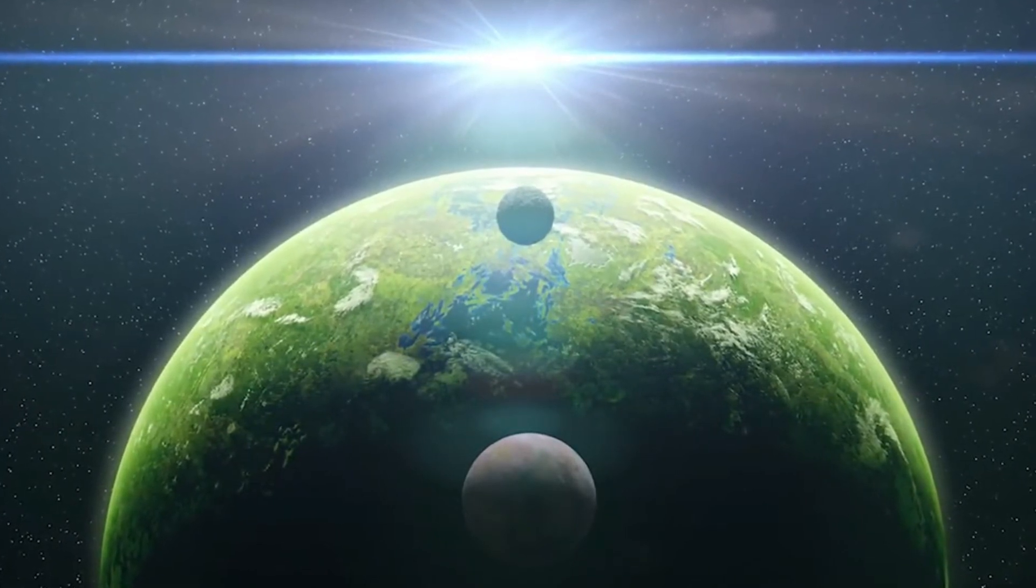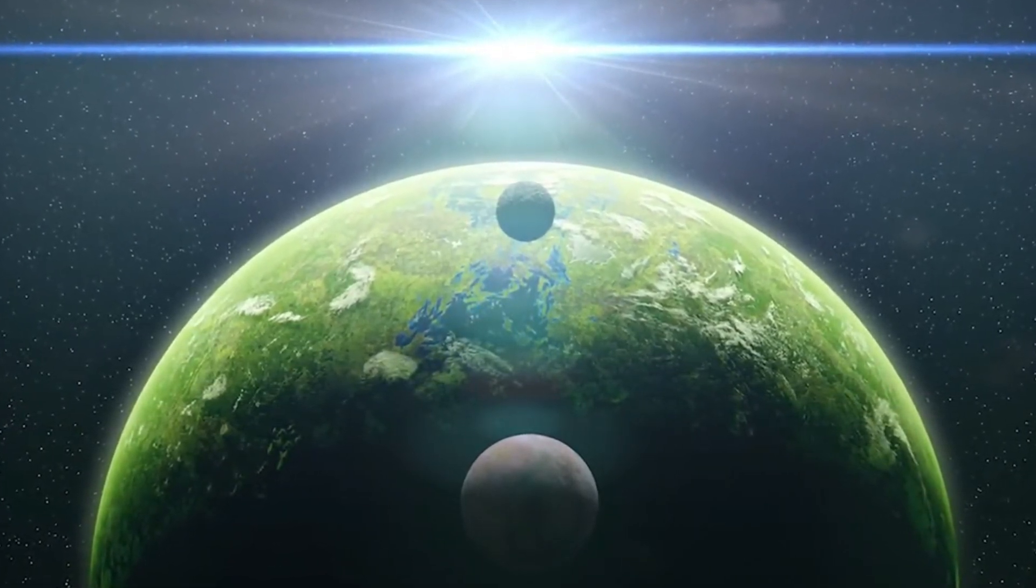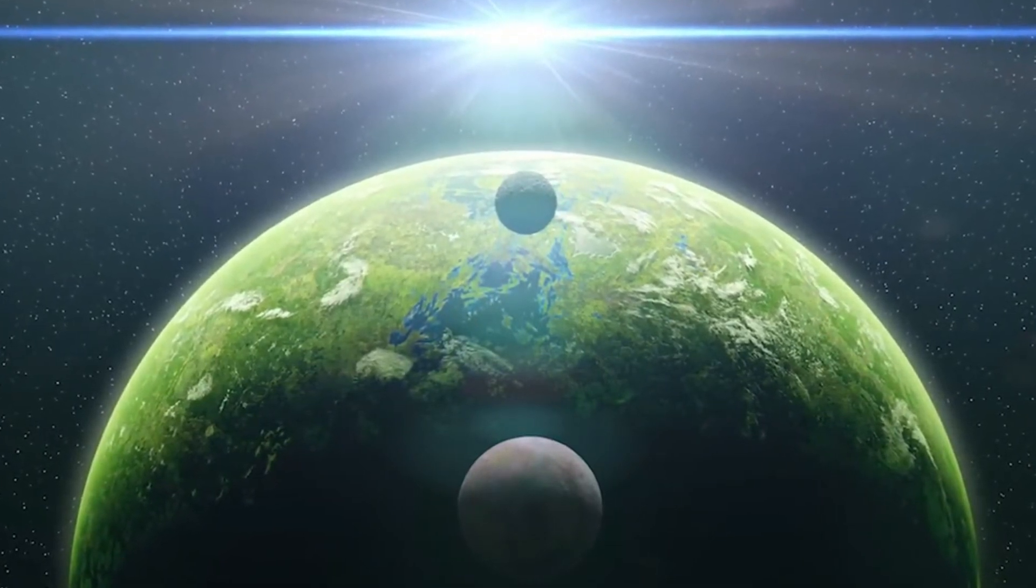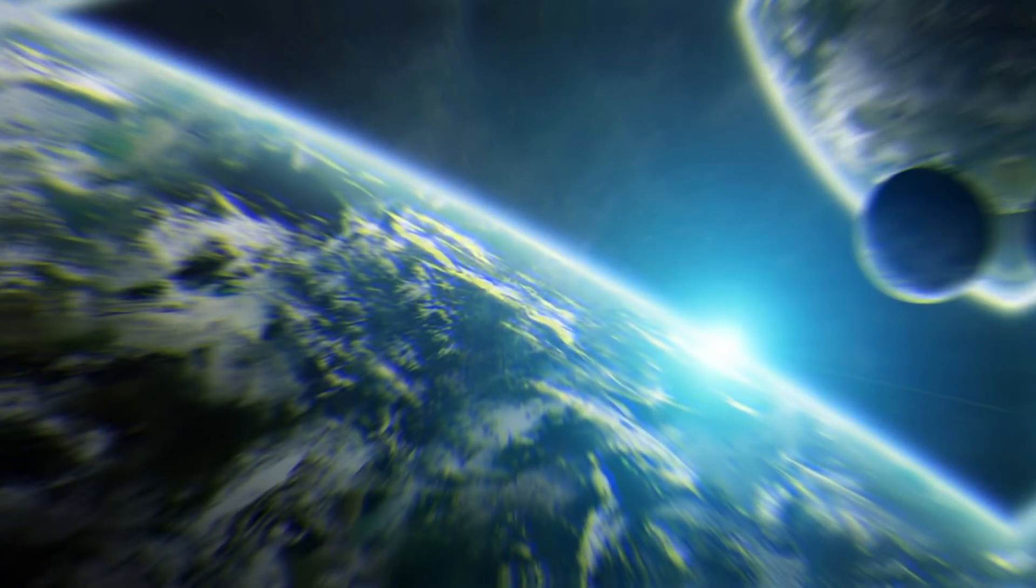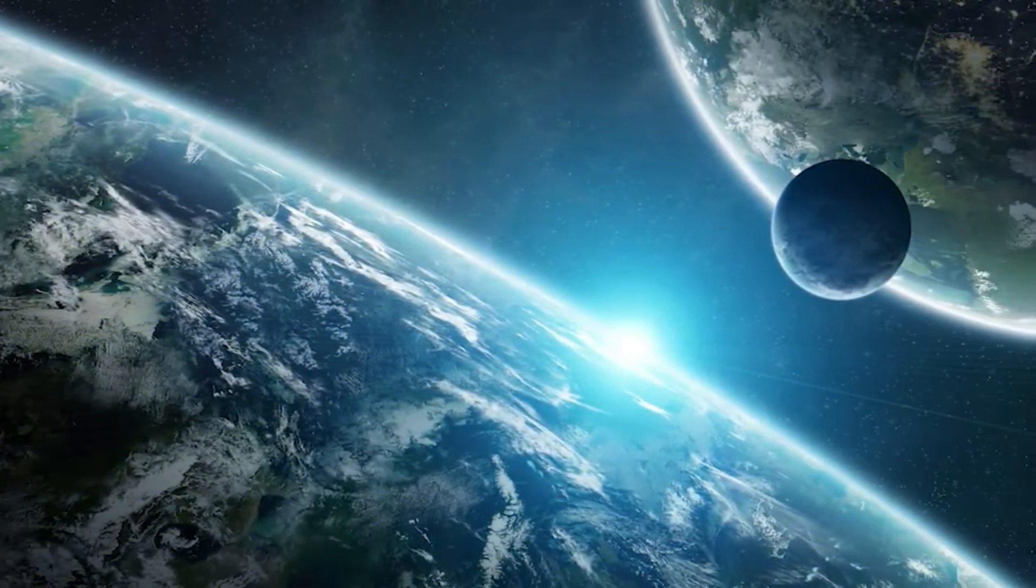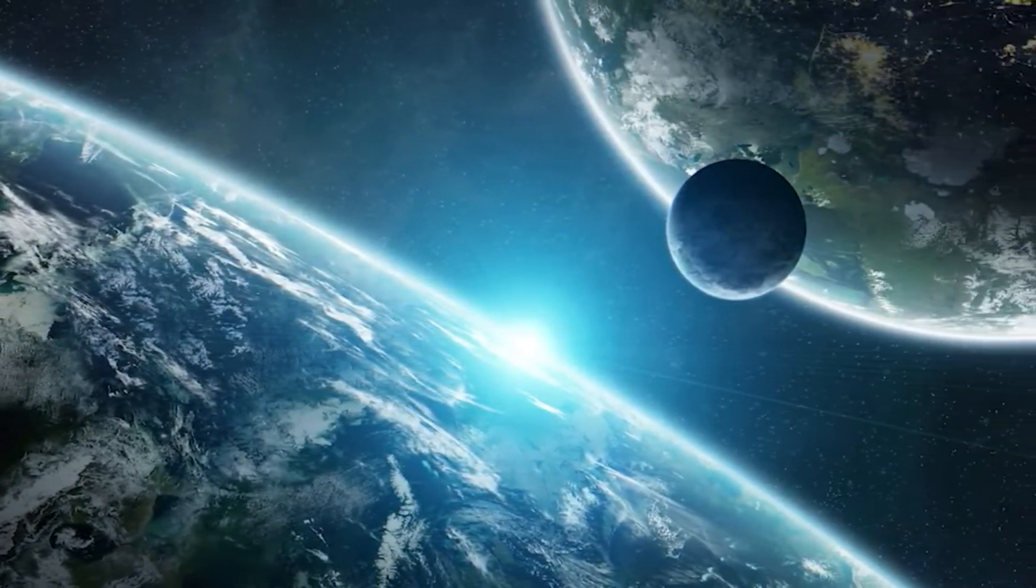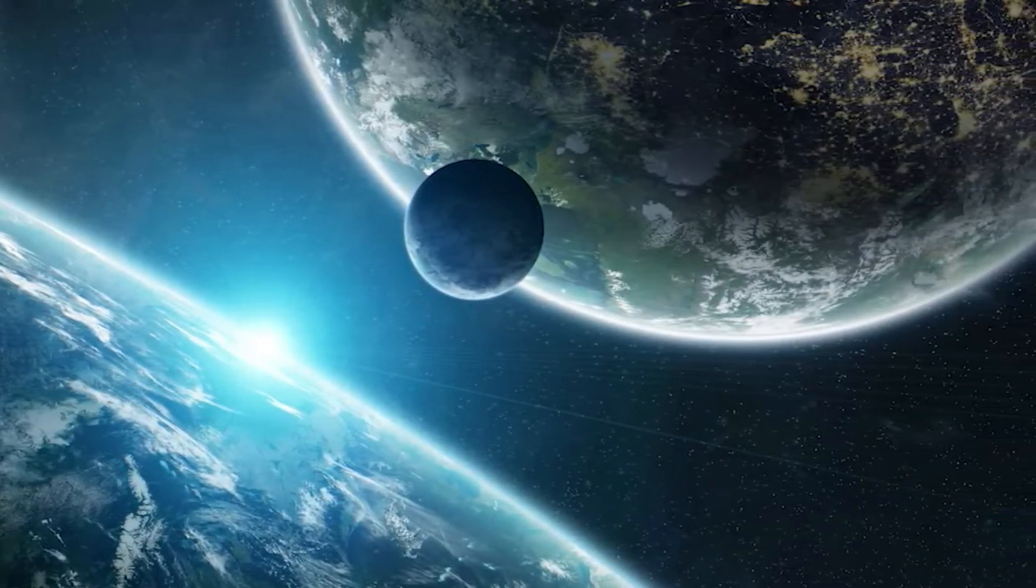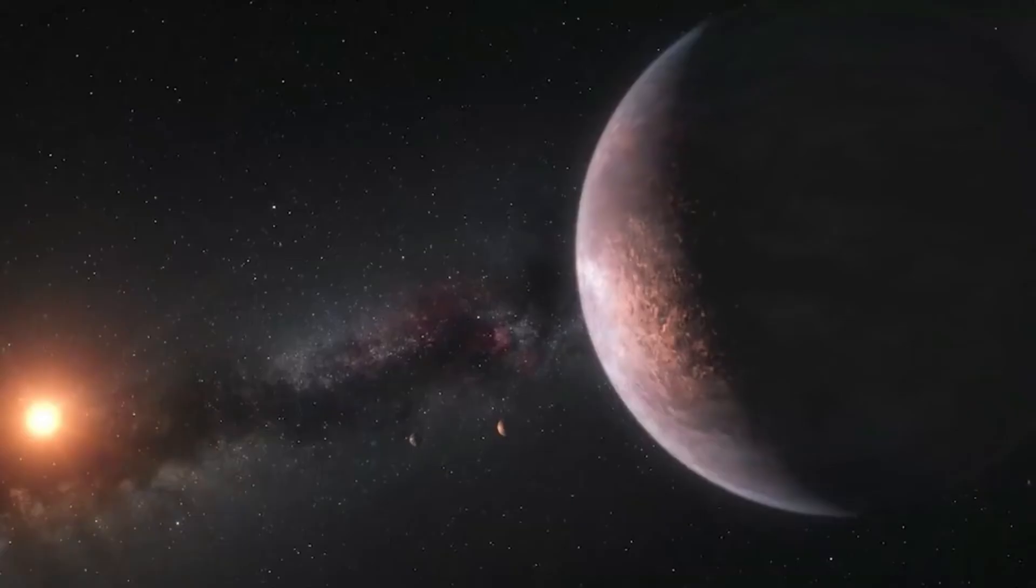Besides, the planet is most likely tidally locked to its planet star, meaning only one side faces its star at all times, while the other side remains frozen cold. Standing on the surface of Proxima Centauri b will be spectacular, as it orbits three stars: its parent star, Proxima Centauri, another star, Alpha Centauri A, and Alpha Centauri B.